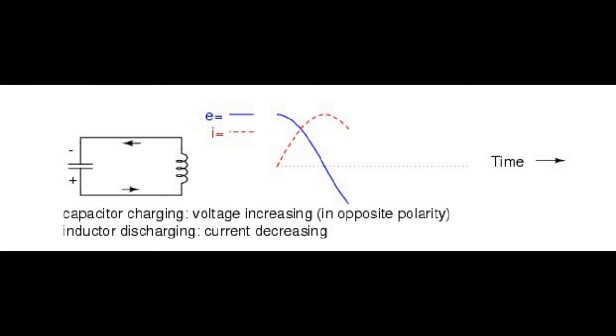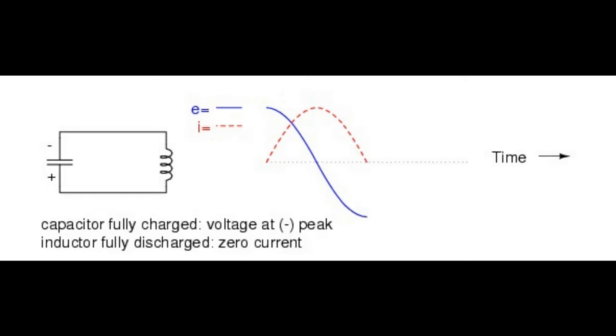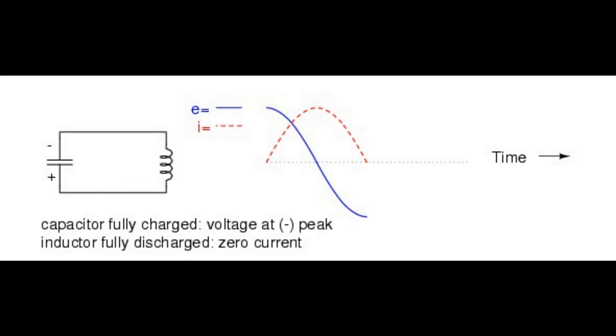The capacitor, being the recipient of this current, will begin to accumulate a charge in the opposite polarity as before. When the inductor is finally depleted of its energy reserve and the electrons come to a halt, the capacitor will have reached full charge or voltage in the opposite polarity as when it started. Now we're at a condition very similar to where we started, the capacitor at full charge and zero current in the circuit.